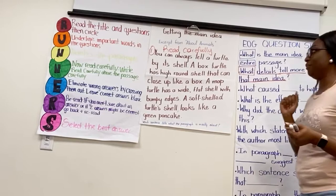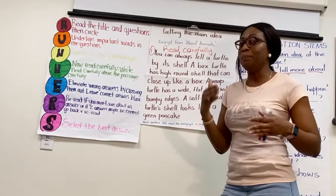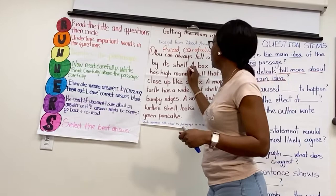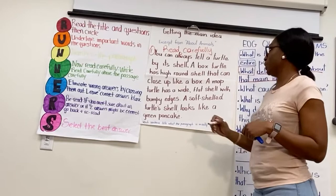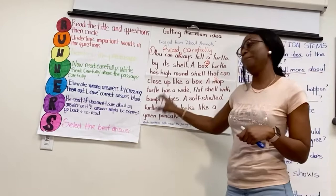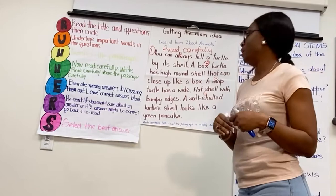Now, my question was: what is the main idea of the entire passage? I'm going a little bit into main idea, which is not a part of RUNNERS, but just for today. Main idea is the most important point in the text — what is the most important thing the author wants you to know? Let's look at the sentences. Sentence one: you can always tell a turtle by its shell. Sentence two: a box turtle has a high round shell that can close up like a box. Sentence three: a map turtle has a wide, flat shell with bumpy edges. Sentence four: a soft-shell turtle's shell looks like a green pancake.